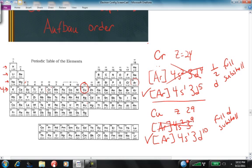Other common exceptions are for silver and gold. And I bet you could figure out the electron configurations for silver and gold if I told you that they as well will promote an electron, in this case from the 5s to the 4d, and in this case for gold, from the 6s to the 5d subshell.